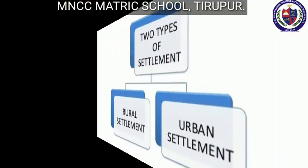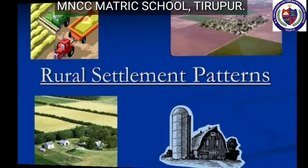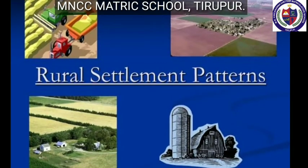Next topic: Classification of Settlements. On the basis of activities, settlements may be classified as rural and urban settlements. Rural settlements: any settlement where most of the people are engaged in primary activities like agriculture, forestry, mining, and fishery is known as a rural settlement. Next topic: Patterns of Rural Settlements.